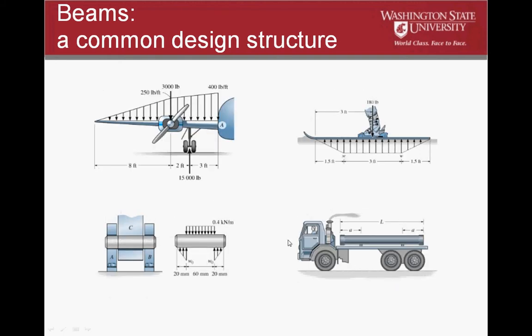Here are some less common beams or items that could be modeled as beams. A wing can actually be modeled as a beam. This would be considered a cantilevered beam - it's supported by the tires or the wheels, and then it's cantilevered out over the edge.